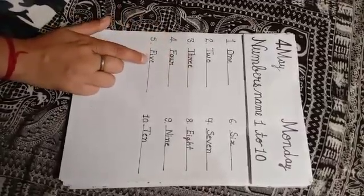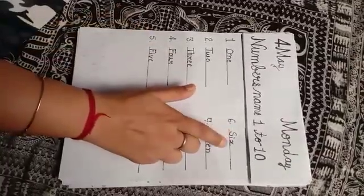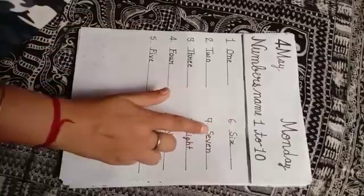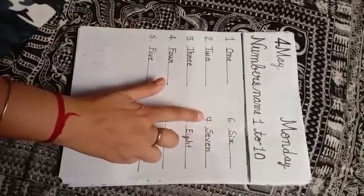Five. F, I, V, E, five. Six. S, I, X, six. Seven. S, E, V, E, N, seven.